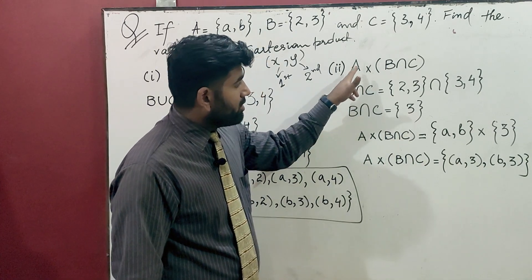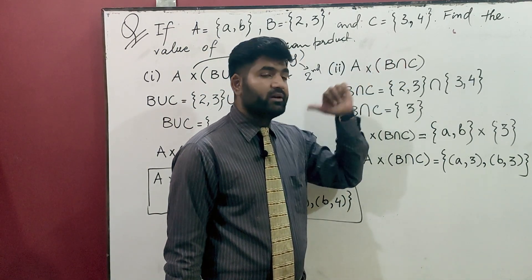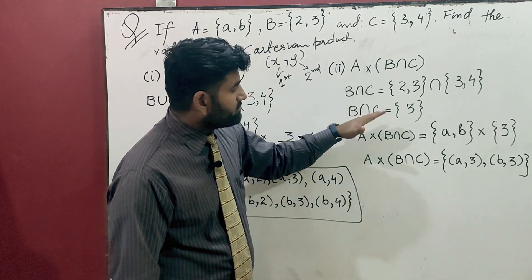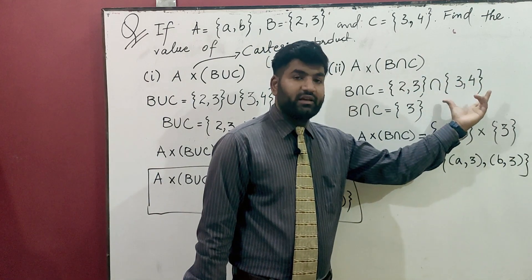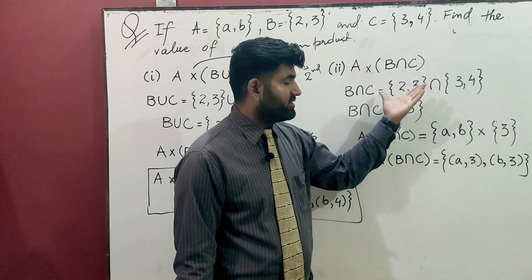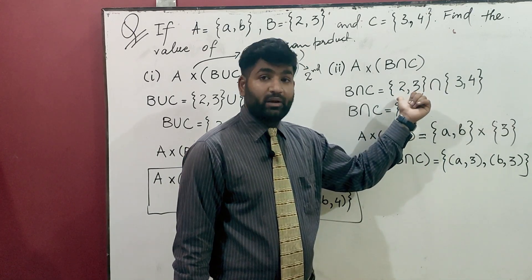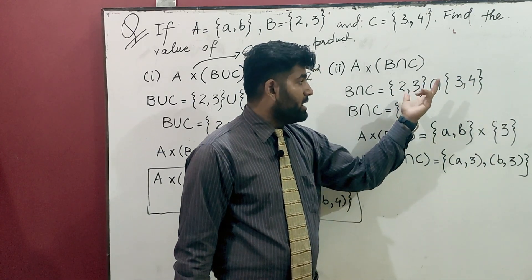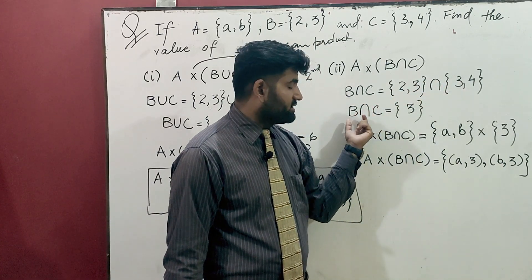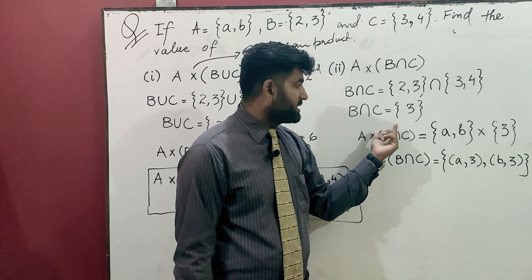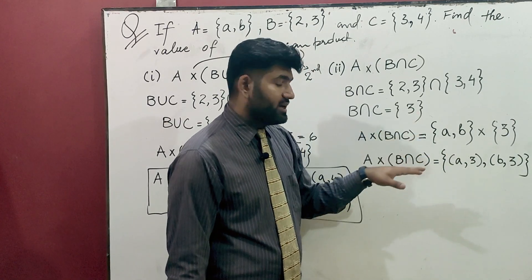It is A and the Cartesian product of B intersection C. So you first find B intersection C. You have two sets. Now, intersection means common elements. So 2, 3 in B and C has 3, 4. There is one element which is common. So in intersection, check for common elements. It is only 3. So B intersection C is 3.